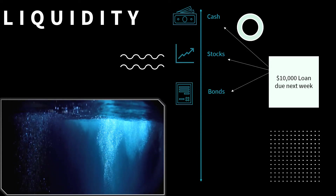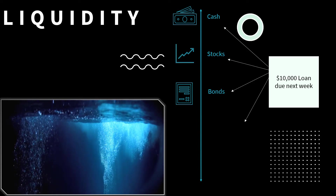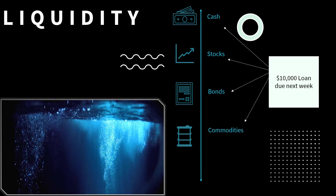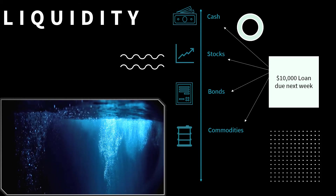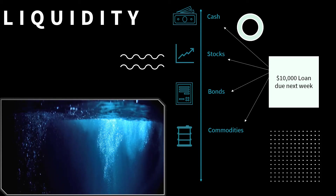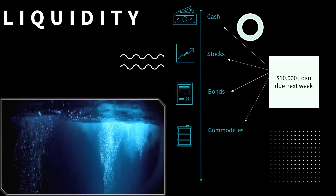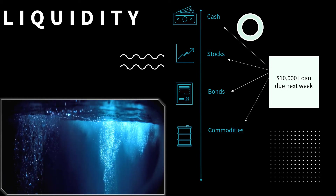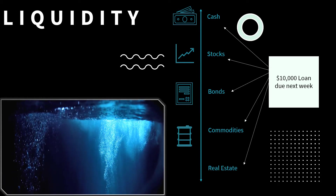However, if you needed to sell tangible assets like a large piece of machinery in order to make the cash available, it would likely take time to find a buyer, agree on a price you are both happy with, for the buyer to free up their cash, complete the purchase, and deliver the machinery.